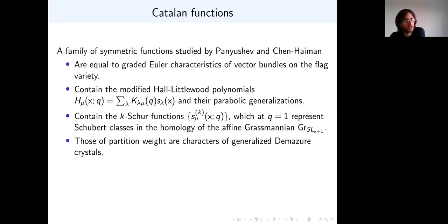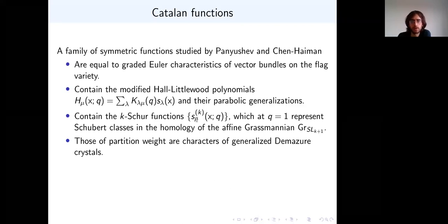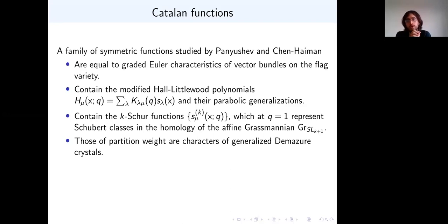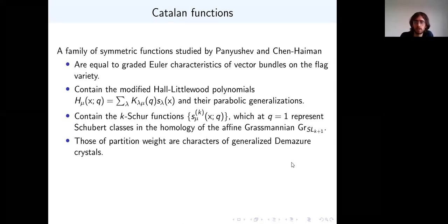The K-Schur functions arose in the study of the Macdonald positivity conjecture and were later connected to the homology of the affine Grassmannian. One of the new things I want to tell you about today is a connection to what are called generalized Demazure crystals. The general crystal theory here is pretty difficult, so I'm going to give a shadow of it in what are known as finite type A crystals, but we'll at least get some hints of this connection.